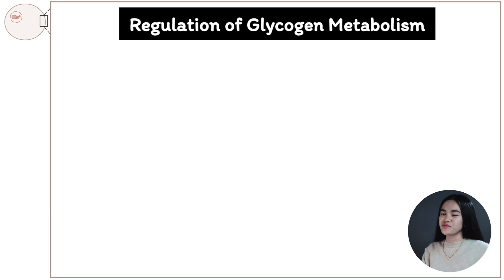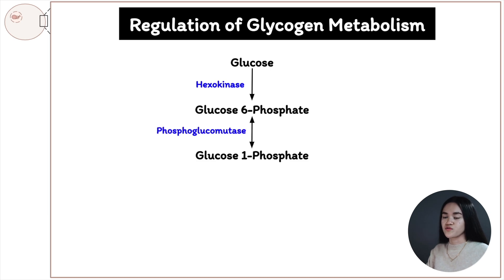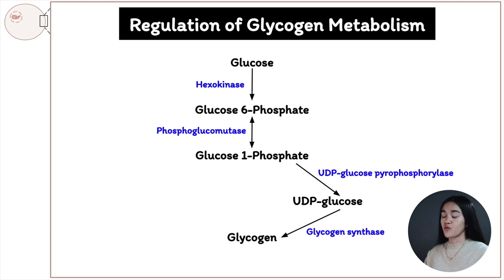Let's begin by drawing the glycogen synthesis and degradation pathway. In glycogen synthesis, we start with glucose, which is converted to glucose 6-phosphate by hexokinase — adding a phosphate group to that 6-carbon. Then it's converted to glucose 1-phosphate by phosphoglucomutase, a reversible reaction. Glucose 1-phosphate then becomes UDP-glucose by UDP-glucose pyrophosphorylase, and then glycogen synthase elongates the glycogen chain to form glycogen.